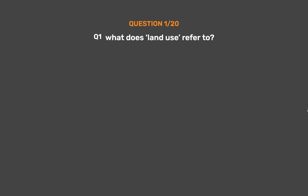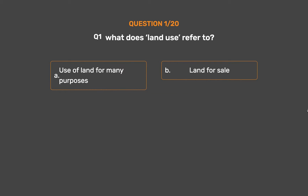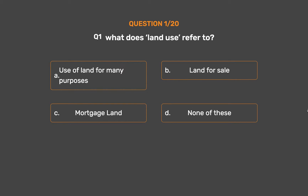Question No. 1. What does land use refer to? Option A: Use of land for many purposes. Option B: Land for sale. Option C: Mortgage land. Option D: None of these. The correct answer is Option A: Use of land for many purposes.